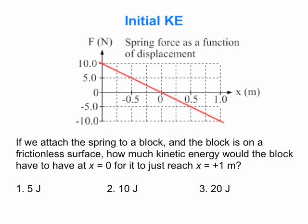Now let's talk about kinetic energy and work. Here's a scenario using the same force graph. We attach a block to our spring on a frictionless surface. We start the block at x equals zero, give it some initial kinetic energy with velocity in the positive direction, and we want the block to just reach x equals plus one. What is its initial kinetic energy at x equals zero? Five joules, 10 joules, or 20 joules?